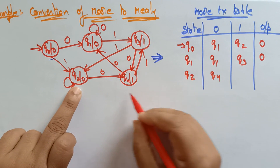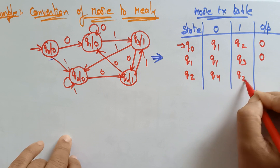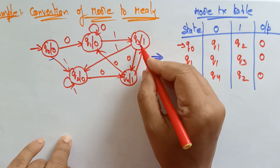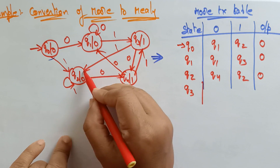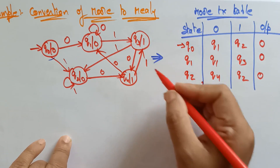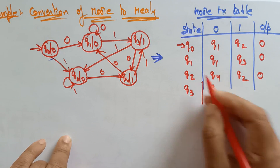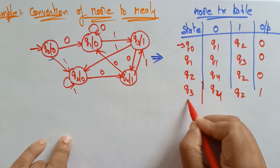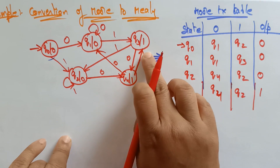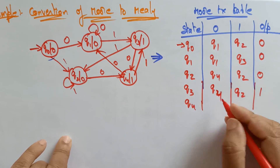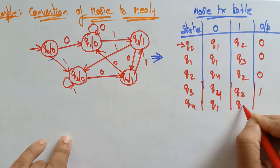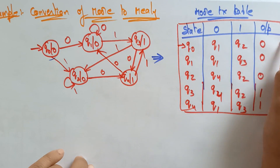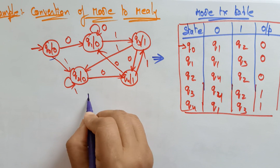Q2 on zero goes to q4, and q2 on one goes to q2 itself, and the output of q2 is zero. Now coming to q3: q3 on zero goes to q4, and q3 on one goes to q2, and the output generated by q3 is one. The last state is q4: q4 on zero goes to q1, and q4 on one goes to q3, and the output of q4 is one. This is the state transition table for the given Moore machine. Now I am converting this Moore machine into a Mealy machine.